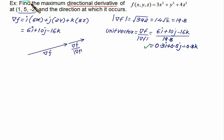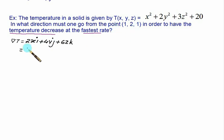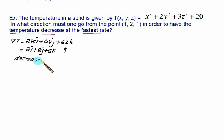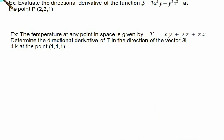Example: The temperature T(x,y,z) = x² + 2y² + 3z² + 20. Find the fastest rate of change at (1, 2, 1). grad T = 2x·i + 4y·j + 6z·k. At (1, 2, 1) this gives 2i + 8j + 6k. Since the value is positive, temperature is increasing. To find the direction of temperature decrease, reverse the sign: the direction is −2i − 8j − 6k — travel in the opposite direction of the increasing gradient.